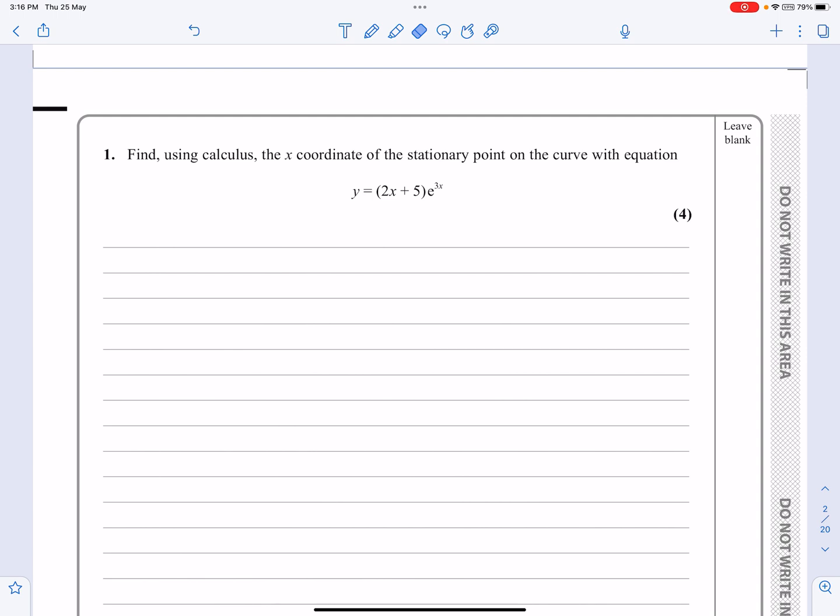First thing we need to recognize is that this is going to be a differentiation question using the product rule. If I want to find the stationary points, I'm going to differentiate and put equals 0. Let's get started with it and we can look at it in more detail as we go through.